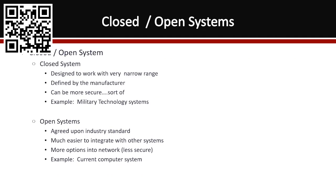An open system is agreed upon an industry standard. A good example would be Windows, Wi-Fi, or the newer millimeter wave wireless technology — these are all built on published standards. It's much easier to integrate with other systems because the standard is known and they can utilize it, offering many more options especially within a network. However, because it is so open, in some respects it can be less secure.